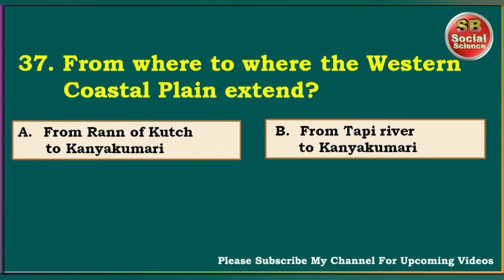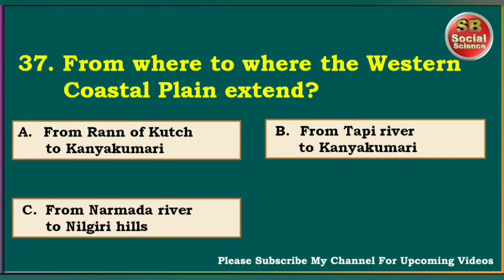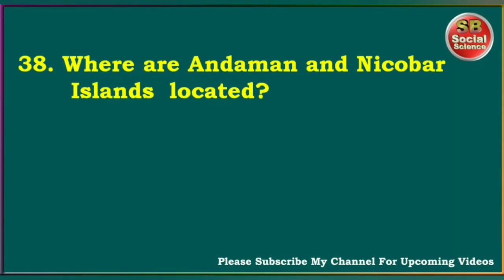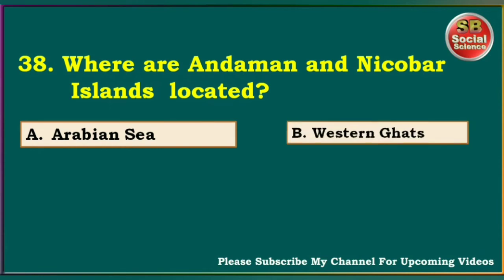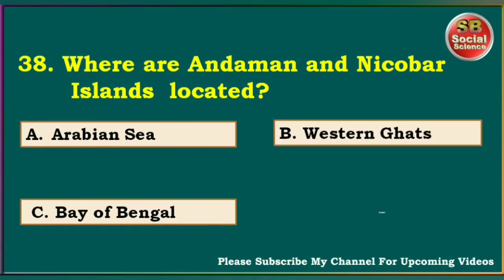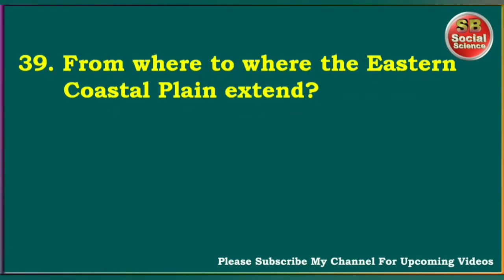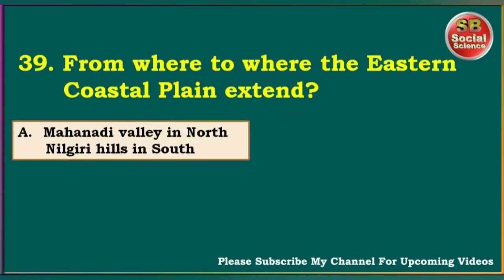From where to where does the Western Coastal Plain extend? From Rann of Kutch to Kanyakumari, from Tapti River to Kanyakumari, from Narmada River to Nilgiri Hills, from Krishna River to Nilgiri Hills. The answer is from Rann of Kutch to Kanyakumari. Where are the Andaman and Nicobar Islands located? Arabian Sea, Bay of Bengal. The answer is Bay of Bengal.